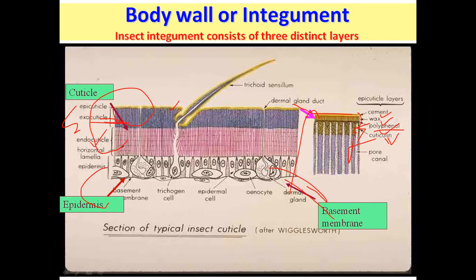The endocuticle is a soft, light-colored, and unsclerotized layer. It consists mainly of protein and hard protein as well, but unlike the exocuticle it remains soft and flexible.